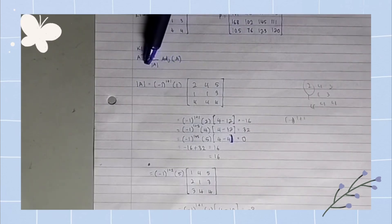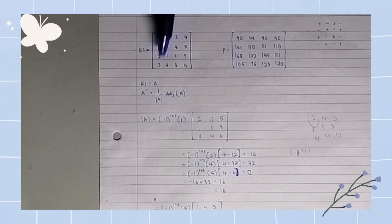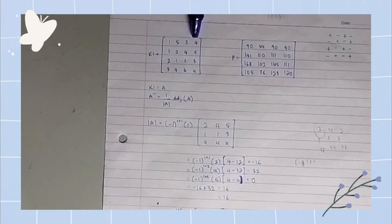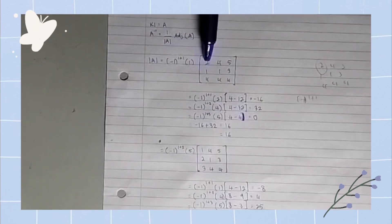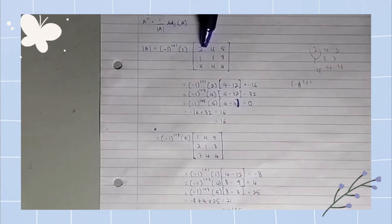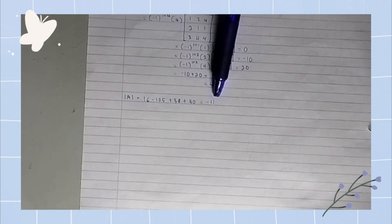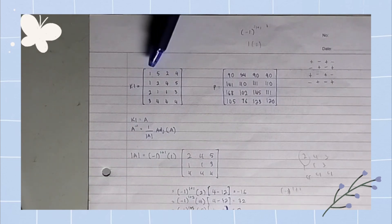To find the determinant, it is actually the sum of cofactors of matrix A in a row, meaning we only need one row to get the determinant. In this case we are using the first row and we find all the cofactors of all the numbers on the first row. After we sum up all the cofactors, the determinant of A is negative 11.